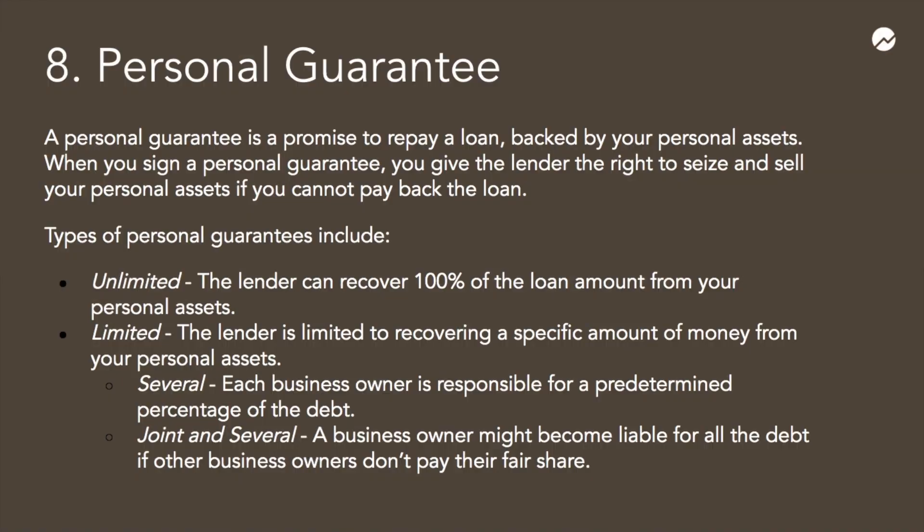When borrowing money for your business, you might be asked to sign something called a personal guarantee. A personal guarantee is a written promise that you make to the lender, backed by your personal assets, to pay back a business loan if the business is unable to pay. A personal guarantee is usually part of your business loan agreement or contract.